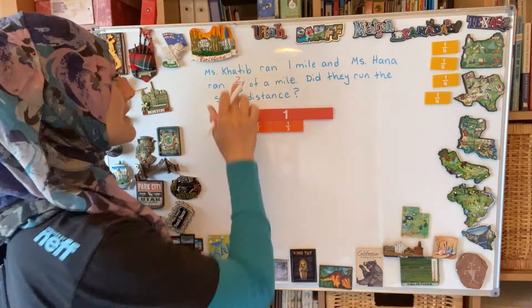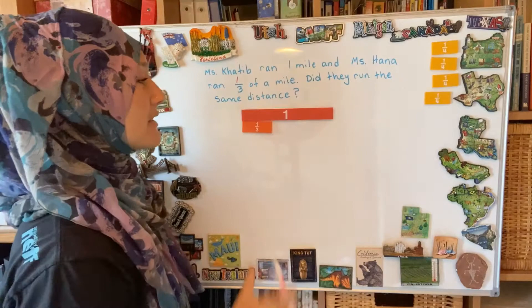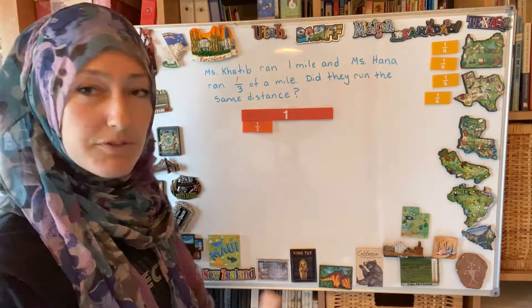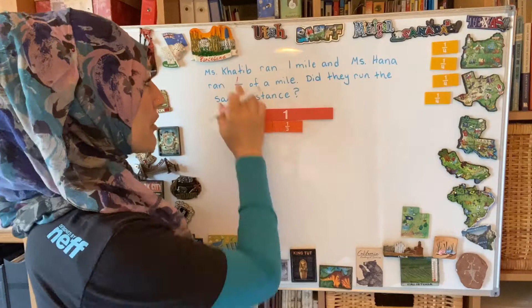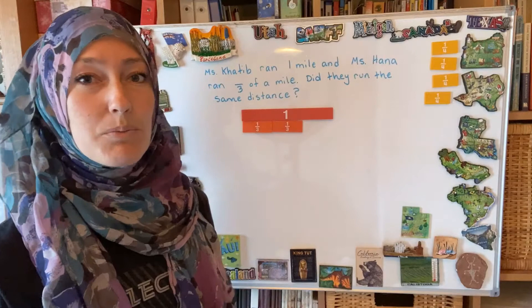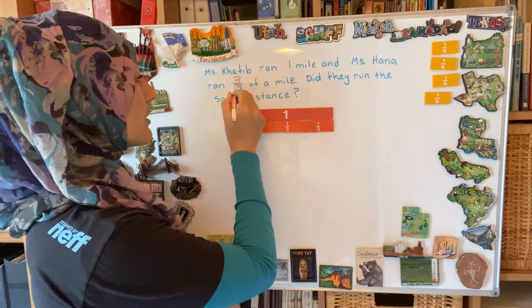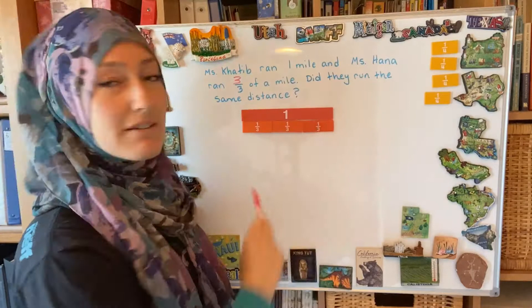What if Ms. Hannah ran one-third of a mile? Then it would look like this. Here's my one mile, one-third ends here — they are not equal. So this first part of the lesson is just knowing what's going to be equal to something else. If I'm talking about third-sized pieces, how many do I need to make one whole? I need three of them. So three-thirds is going to be equal to one mile.